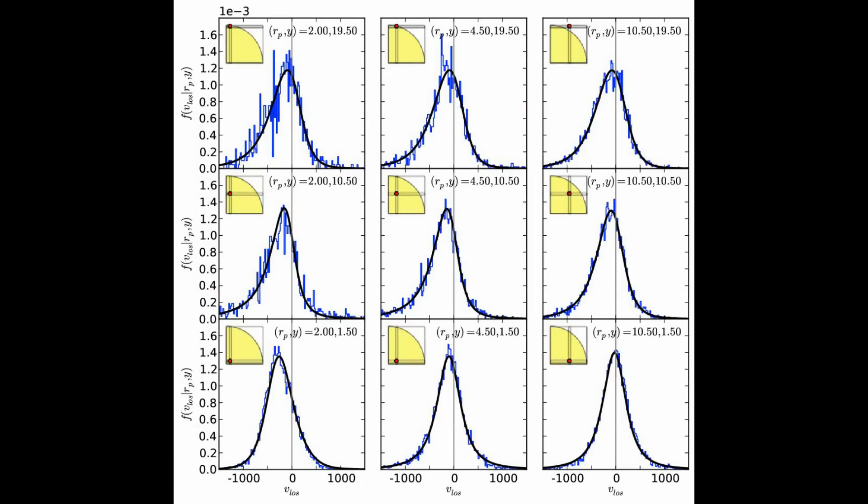Here shows the galaxy line of sight velocity distribution at different positions away from the cluster center, indicated by a red dot inside the yellow quadrant in each panel. Blue curves are the simulation measurements, and black curves are the predictions from our model.